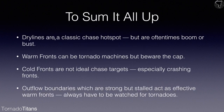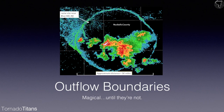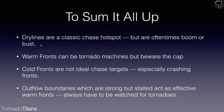To sum it all up: dry lines are the classic chase hot spot but they're boom or bust. Warm fronts are tornado machines oftentimes, but beware the cap, messy storm modes, and HP. Cold fronts are not ideal chase targets, especially when crashing. Outflow boundaries that are strong but stalled act as effective warm fronts — always watch them for tornadoes. One last note: if an outflow boundary is still cruising south in the mid-afternoon, that day is over — you're not getting great storms along it. That's your surface boundaries. Next we'll talk about each of these more in depth.